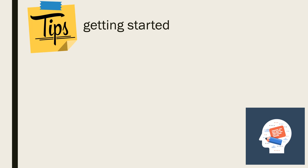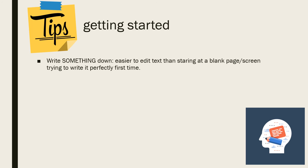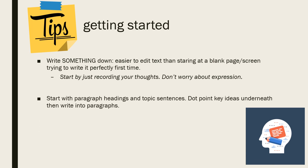Firstly, once you've done your research or completed the investigation, write something down. It is always easier to edit something rather than being paralysed staring at a blank screen because you are trying to write it perfectly straight away. Start by just recording your ideas — what do you want to say, what data did you collect, what do you think it means? Using paragraph headings, topic sentences and key dot points will help you to organise your ideas.